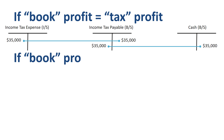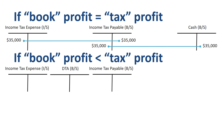If book profit is lower than tax profit, then income tax expense for book or financial accounting purposes will be lower than income tax expense for tax accounting purposes. To correctly prepare your US GAAP or IFRS financial statements, you need to introduce a deferred tax asset for the difference. In this case, the income tax expense is 35k and the income tax for tax purposes is 40k, hence a deferred tax asset of 5k.